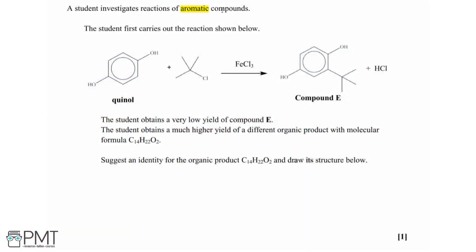The student investigates reactions of aromatic compounds. The student first carries out the reaction of quinol, an aromatic compound, with 2-methyl-2-chloropropane, using a halogen carrier of iron trichloride, producing substituted compound E — where one hydrogen on quinol is replaced — and also producing HCl. This reaction, adding a carbon-based group to an aromatic compound, is a Friedel-Crafts reaction. The student obtains a very low yield of compound E.